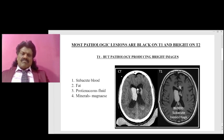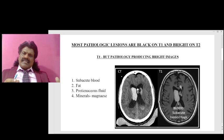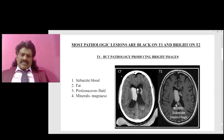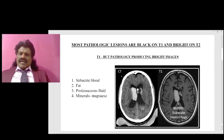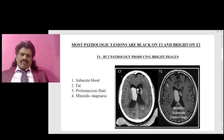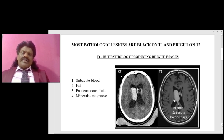As mentioned, most lesions are hypointense on T1 and hyperintense on T2. The key exception is subacute hemorrhage, which appears white or bright on T1. On CT scan, blood also appears white — so subacute blood appears white on CT and white on T1.